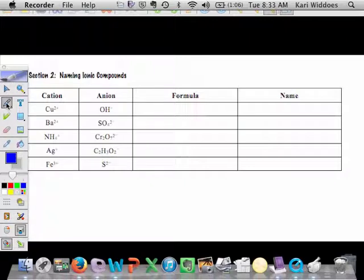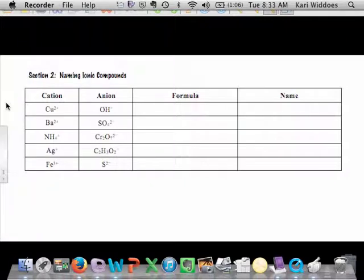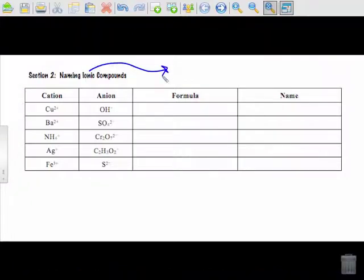What's the characteristic of an ionic compound? An ionic compound has a cation and an anion. What's the goal when you combine them?